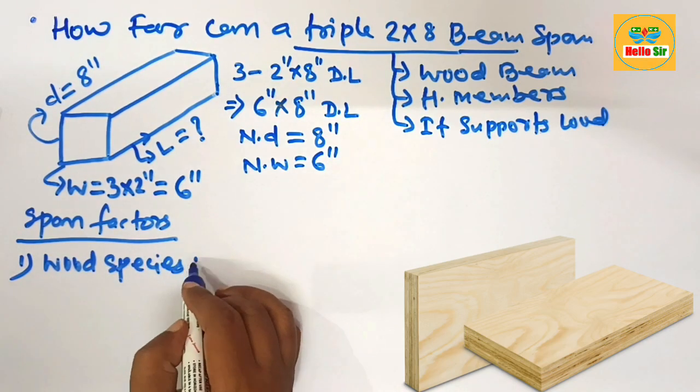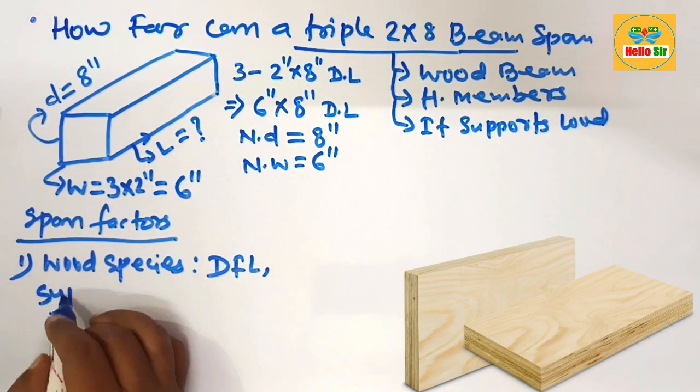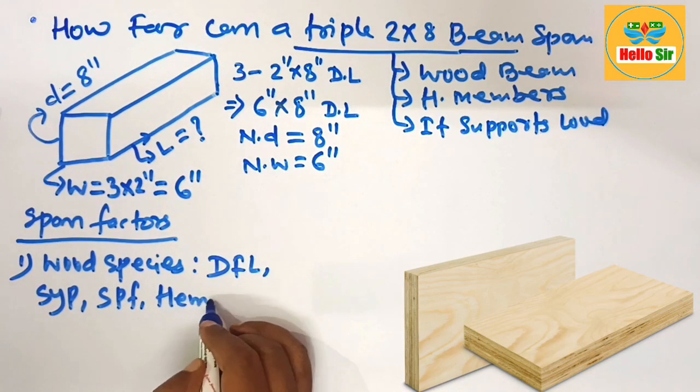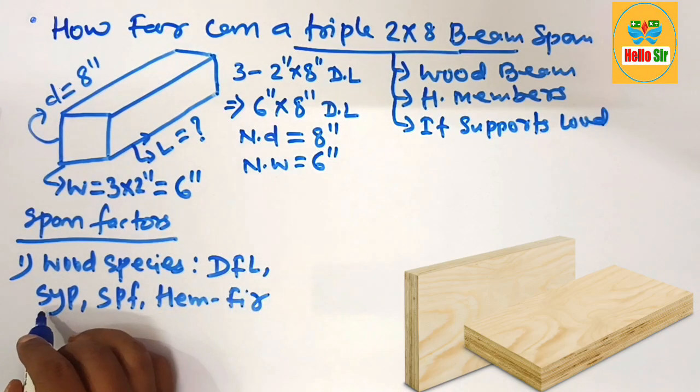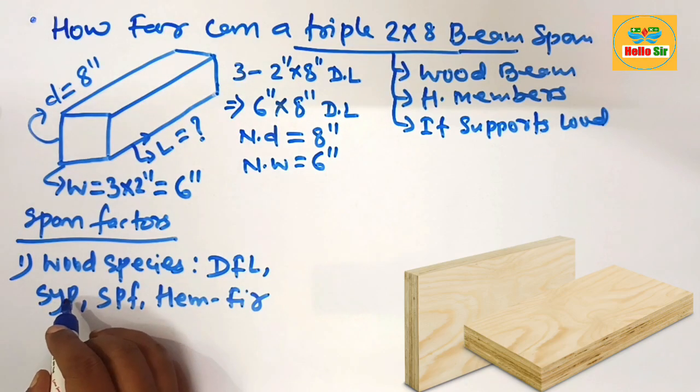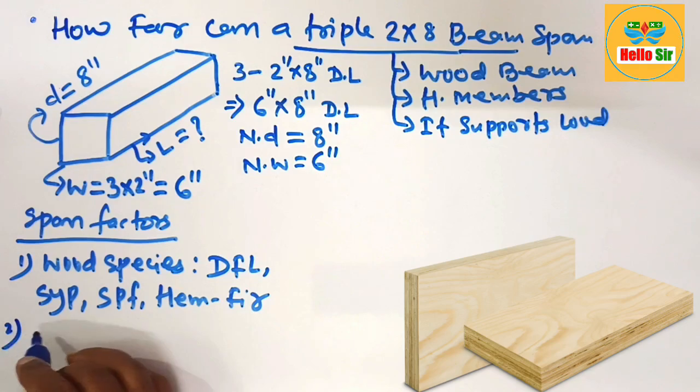There are different kinds of wood species like DFL, SYP, SPF, HemFir. And you know that SYP, that is Southern Yellow Pine, is the strongest wood species and it can span more distance as compared to other species.